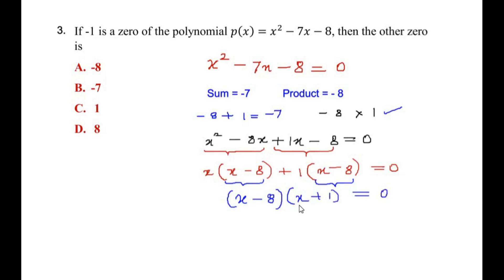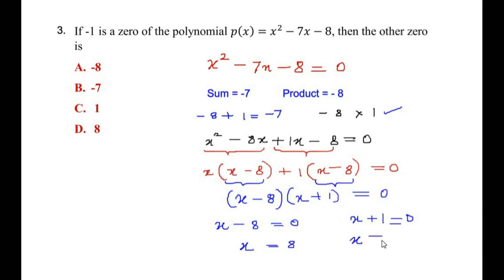We now have two factors: x minus 8 equals 0 and x plus 1 equals 0. From the first, x equals 8; from the second, x equals negative 1. Since x equals negative 1 was already given as a zero, we have found the second zero of the polynomial as 8, which is option D.